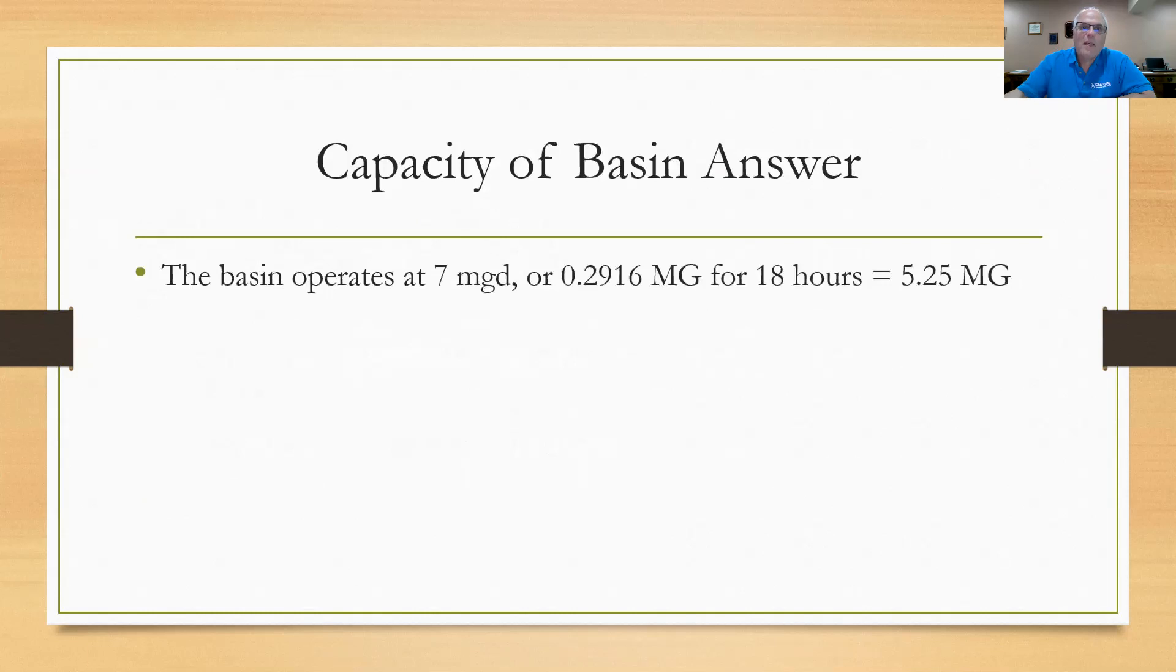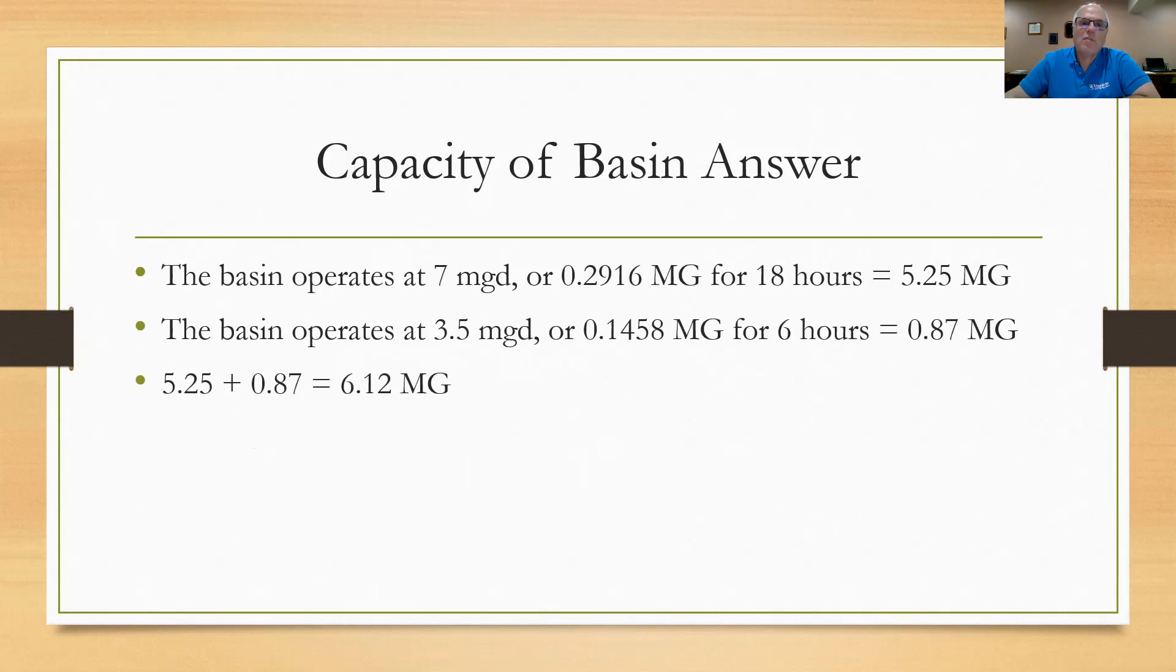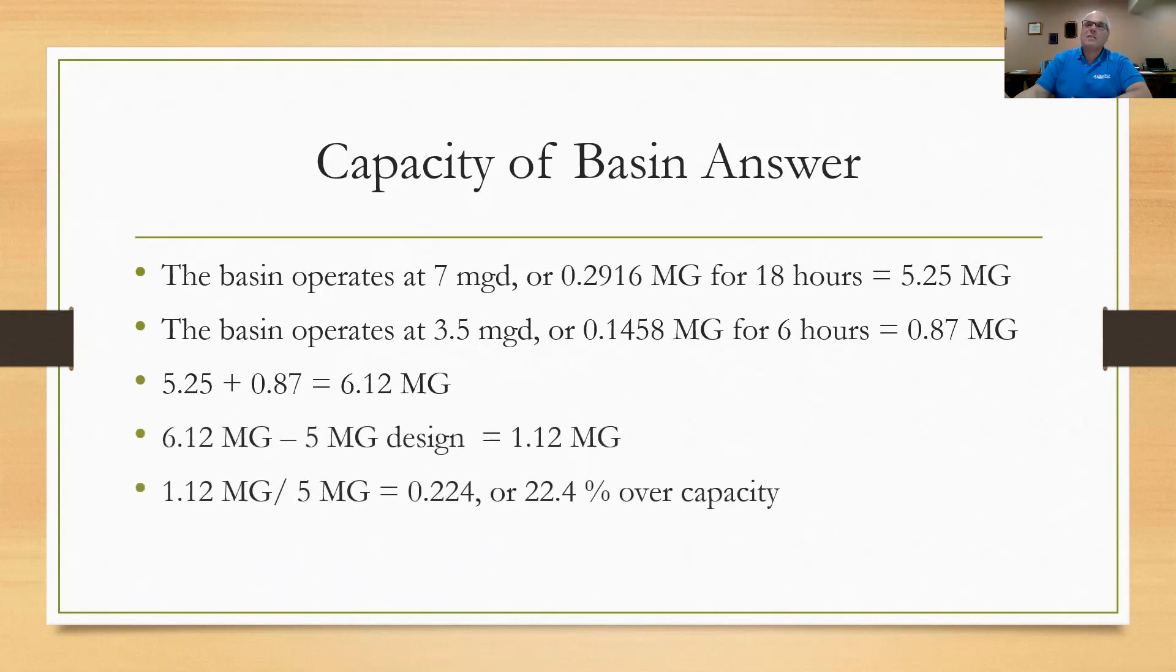And here's what I did. The basin operates at 7 MGD, or that's 0.2916 million gallons for 18 hours. So for 18 hours times 0.2916 million gallons, you come up with a production of 5.25 million gallons through the basin. Now for the other six hours of the 24 hour period, we were operated at half that, 3.5 MGD, because both basins were in service. So it was only taking half of the 7 million gallons, or 0.1458 million gallons for six hours, or 0.87. When I add those two numbers together, I come up with the basin having produced 6.12 million gallons for the 24 hours. Well, the basin was designed to handle 5 million gallons in 24 hours, but it produced 6.12. So I subtract the 5 million from the 6.12 and I come up with an excess production of 1.12 million gallons. When I divide that 1.12 by the 5 million, I come up with about 22.4% over capacity for the 24 hour period.